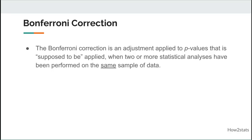The Bonferroni correction is an adjustment applied to p-values that is supposed to be applied when two or more statistical analyses have been performed on the same sample of data. That's the key point — it's the same sample of data.